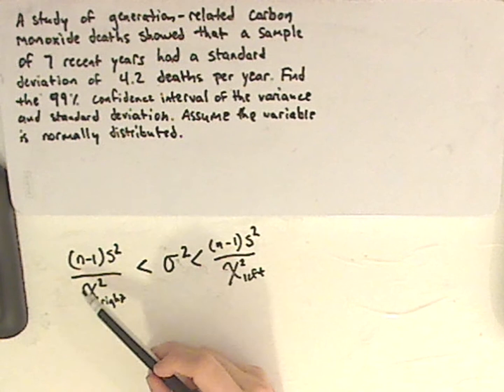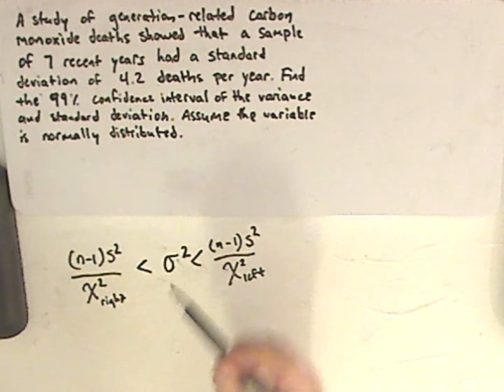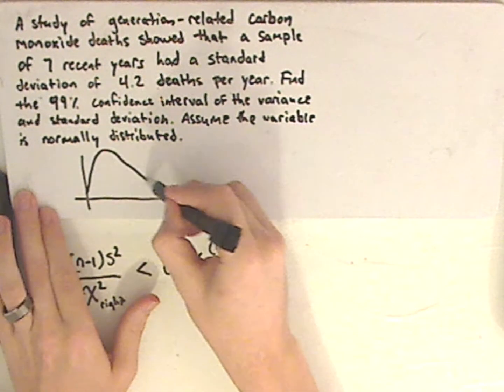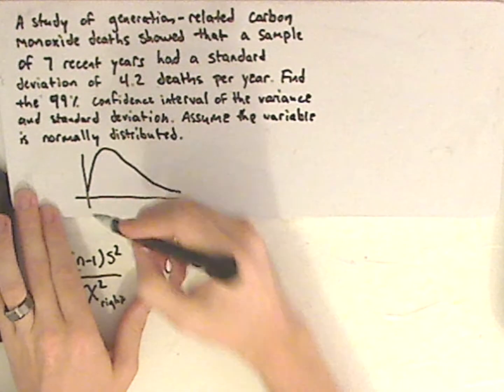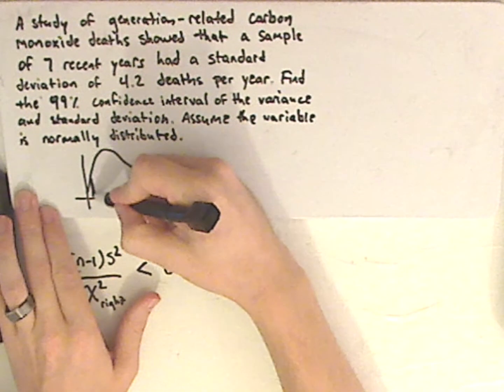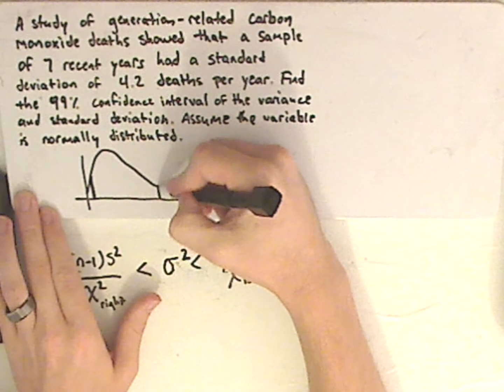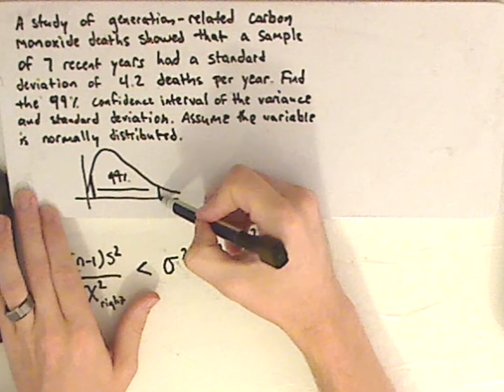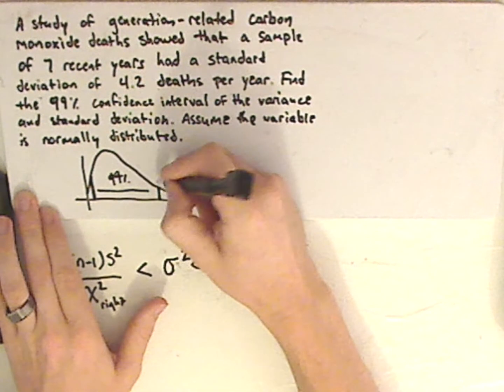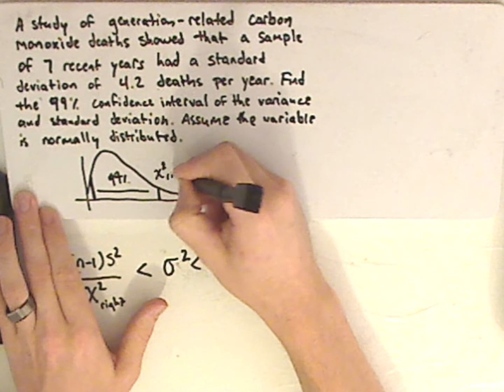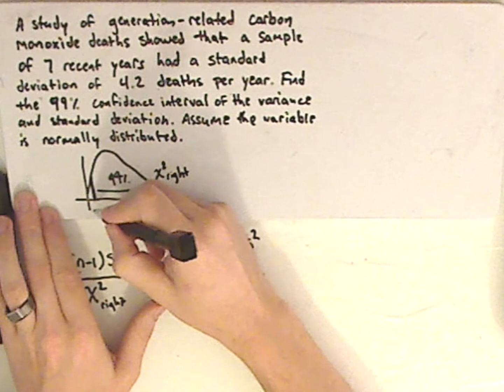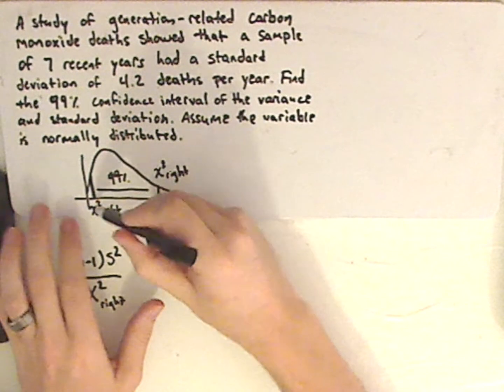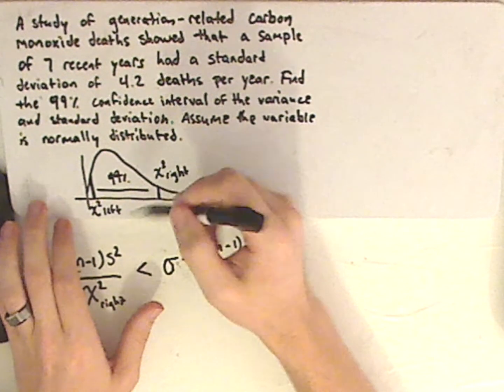So let's first find the chi squared right and then chi squared left. So how do you find that? Well, the chi squared looks like this. And since we're doing a confidence interval, you have 99% in between. So you have to find this value and then this value. This is chi squared right and then this is chi squared left because it's named after the sign that's in the chi squared distribution.